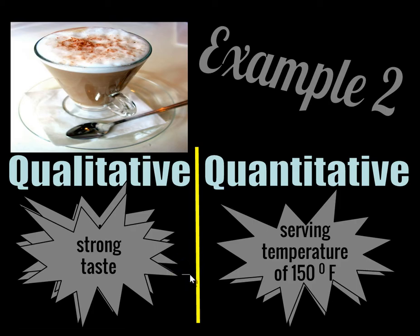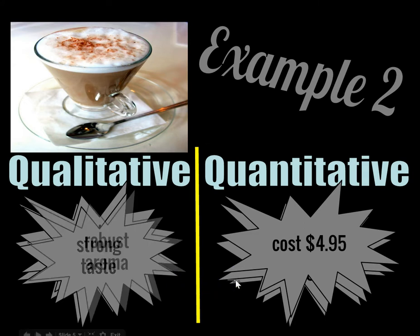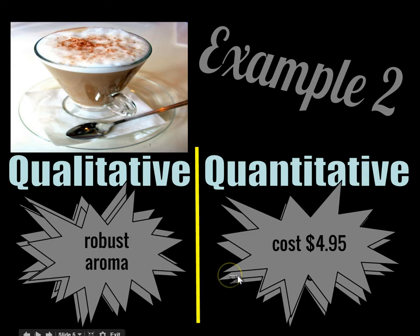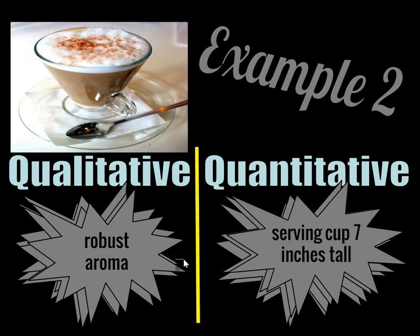The quantitative would be that it costs $4.95. A qualitative would be that it has a robust aroma. A quantitative would be that the serving cup is 7 inches tall.